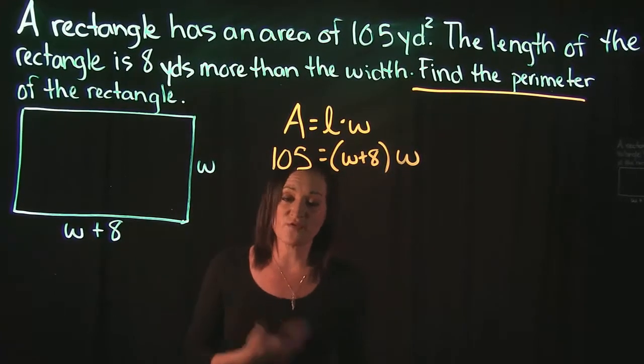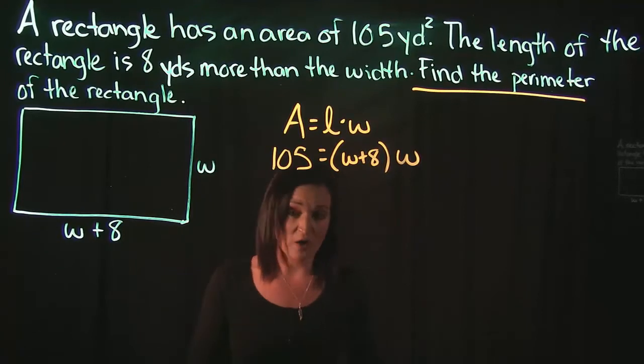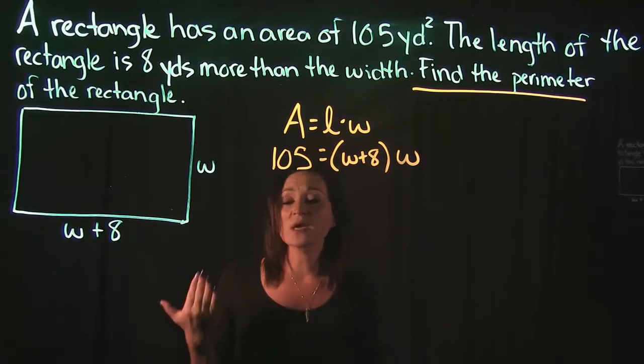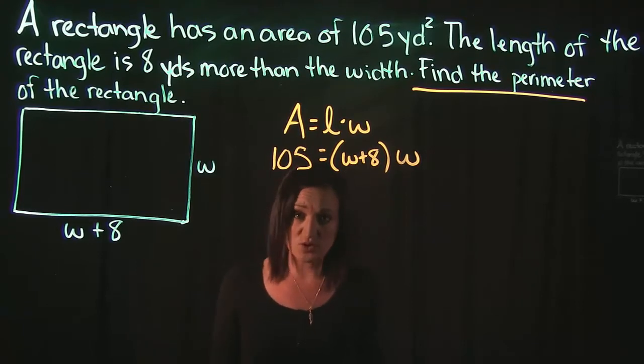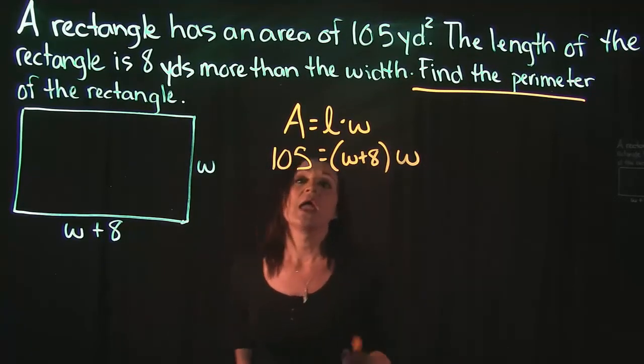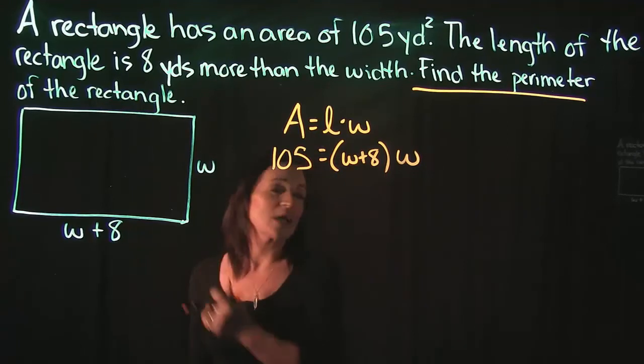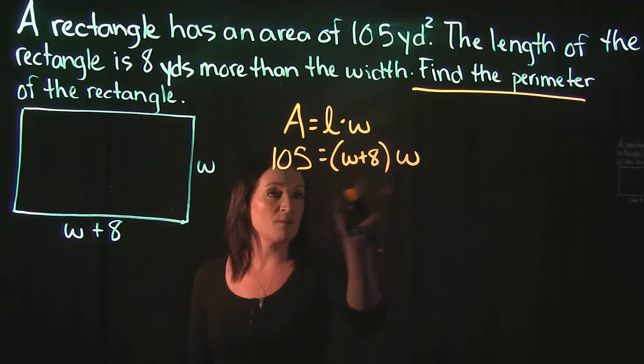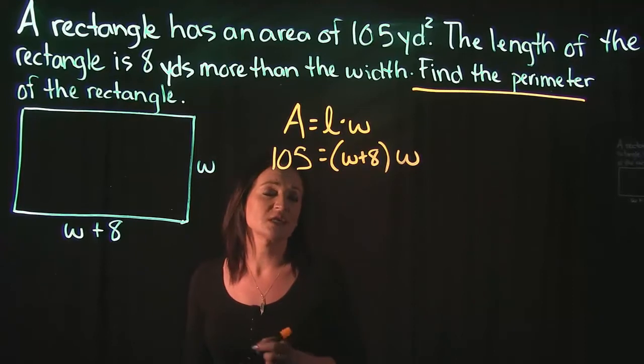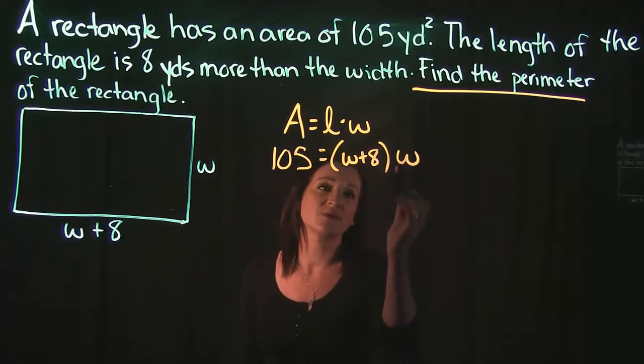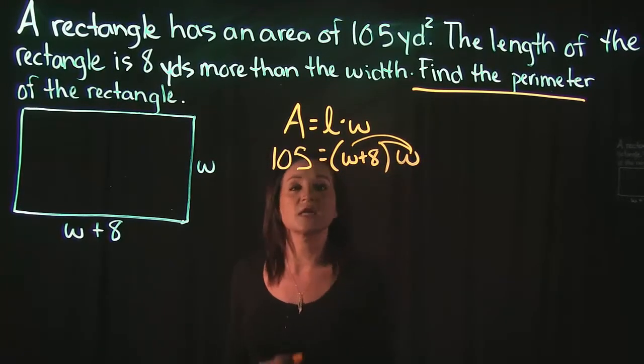This is the formula that we need to solve. We're going to figure out what the width and the length are actually equal to and then use that to find the perimeter. We have to multiply the length and the width together. W plus 8 times W. We're going to distribute the W.